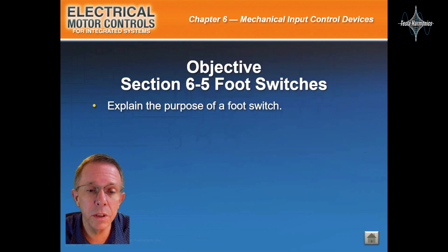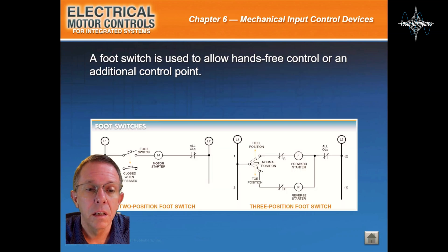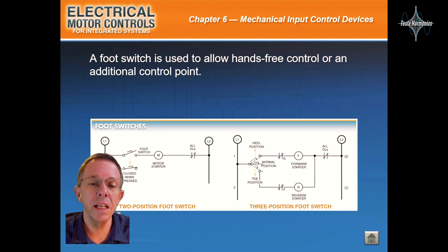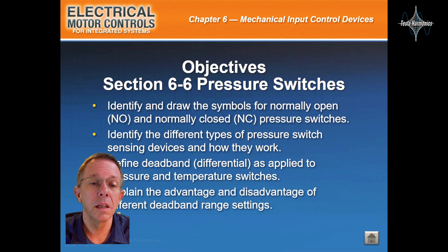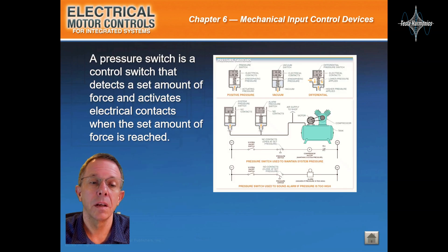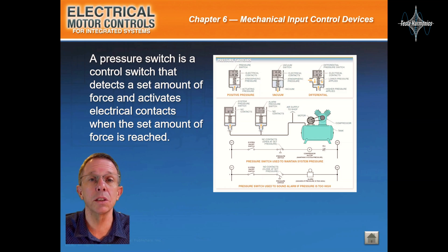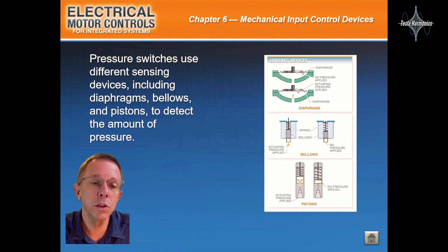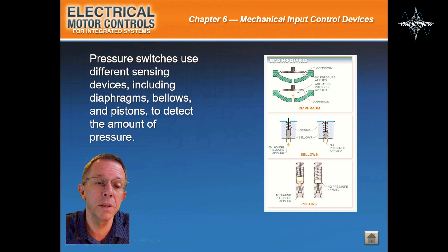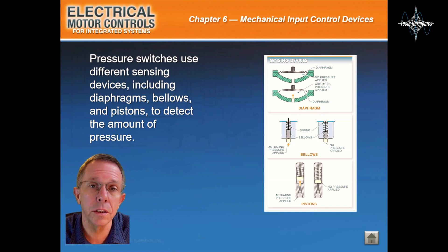Section 6-5: Foot Switches. A foot switch is used to allow hands-free control or an additional control point. Section 6-6: Pressure Switches. A pressure switch is a control switch that detects a set amount of force and activates electrical contacts when the set amount of force is reached. Pressure switches use different sensing devices including diaphragms, bellows, and pistons to detect the amount of pressure.